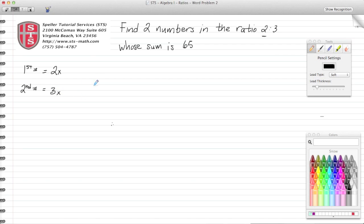They're asking for the sum. We know that sum means to add, so we're going to add 2x plus 3x, and that sum should have a total of 65. Then we continue to solve this algebra problem.